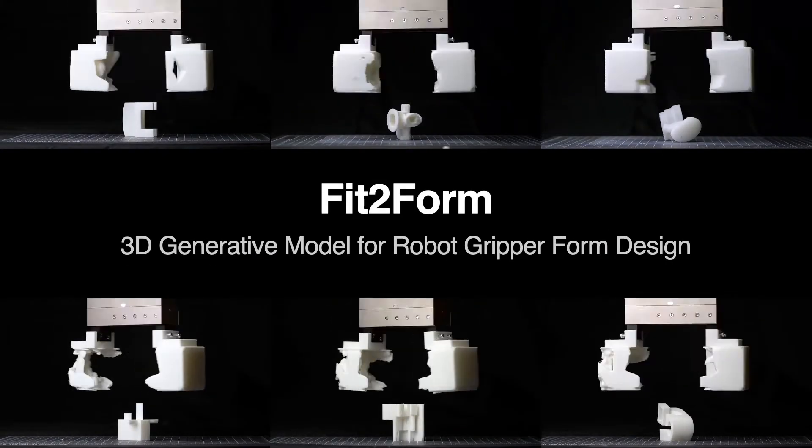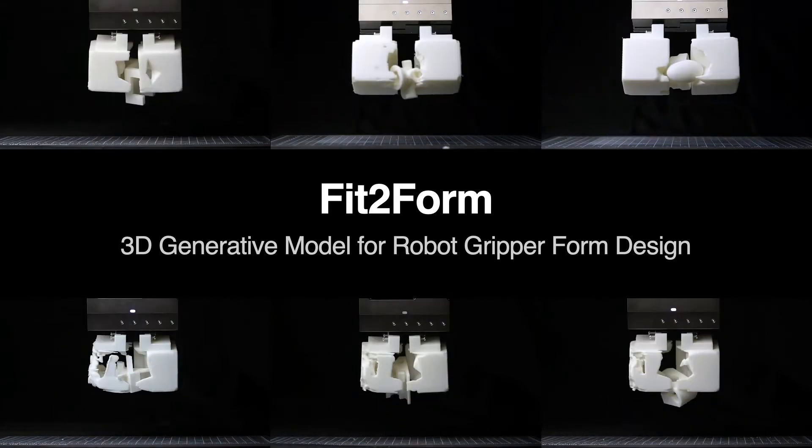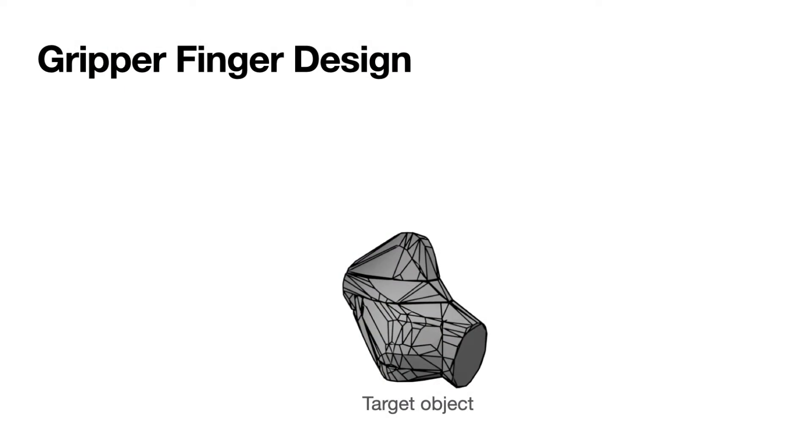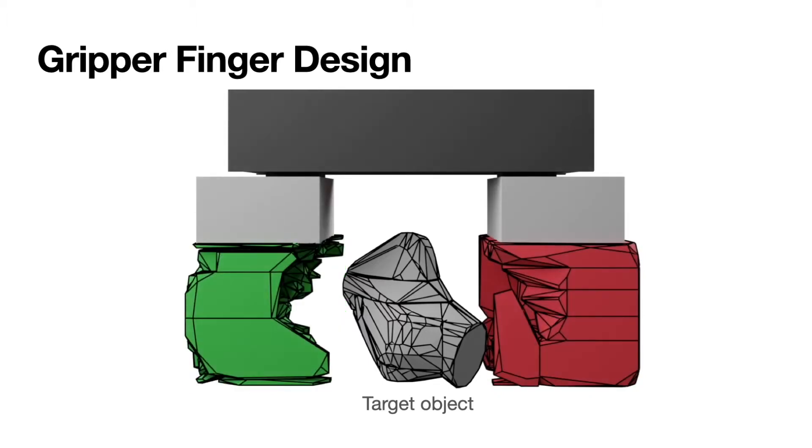We present Fit2Form, a framework for learning a deep 3D generative model for robot gripper finger design. Given a target object, the goal of the algorithm is to generate a pair of fingers for a parallel jaw gripper which would satisfy the following design objectives.